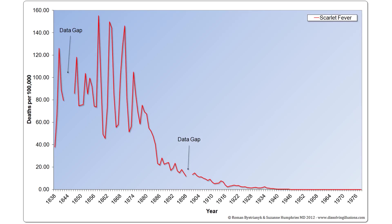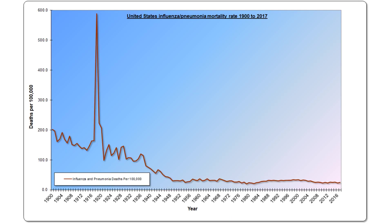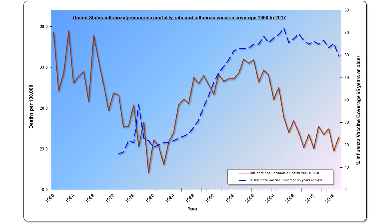Scarlet fever. The deaths from this disease went to zero without any vaccine. Flu. Flu pneumonia deaths declined by about 90% before vaccines for the flu began in the late 1970s. Afterward, deaths actually went up for a period of time before returning again to those levels despite high vaccination rates. So, after 40 years, there has been no improvement in the mortality rate from the flu.